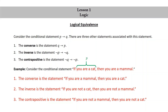If we let p be the statement 'you are a cat' and q the statement 'you are a mammal,' then the original conditional statement can be written as p implies q. The converse can be written as q implies p, the inverse as not p implies not q, and the contrapositive as not q implies not p.